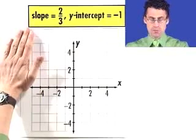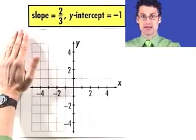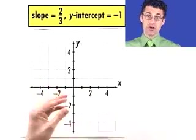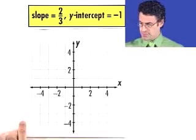Suppose we're told that the slope of a particular line is two-thirds, and its y-intercept is at negative one. I claim just using that information and nothing else, we can produce an accurate sketch of the graph of this line. Let me show you what I mean.